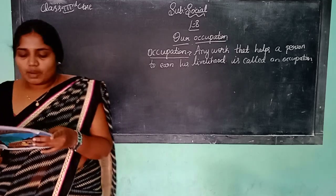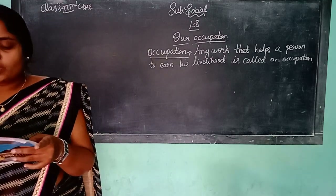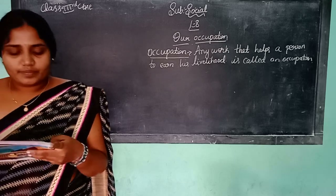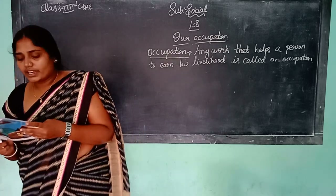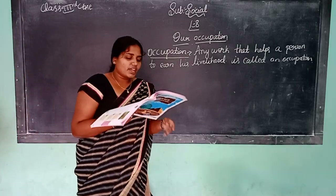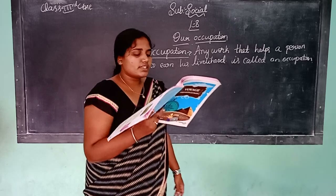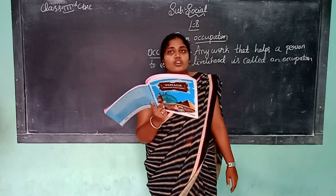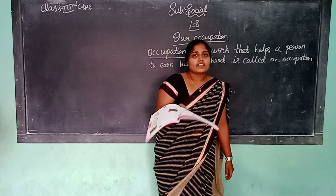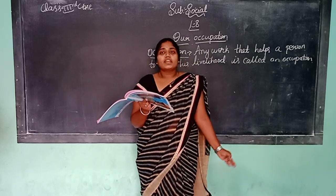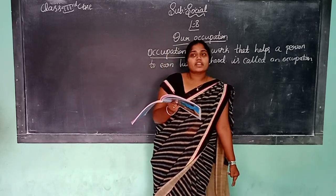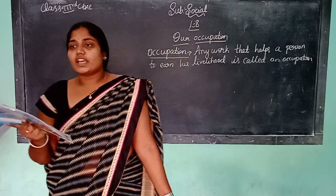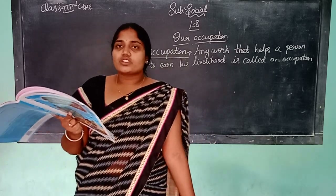We have many occupations of people living in both rural and urban areas. Farming or agriculture is the main occupation of people in the villages or rural areas. Rural areas means villages.